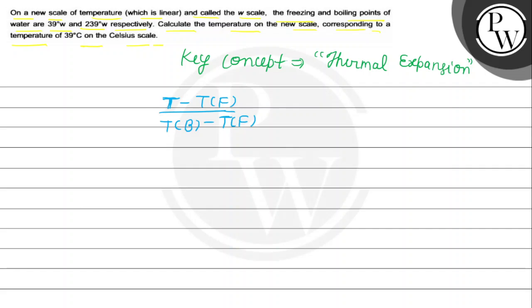So if you consider two scales — just like Celsius, or W, or Fahrenheit — this ratio is fixed across all of them.